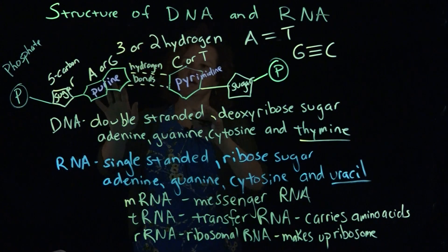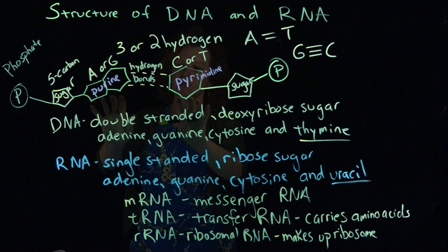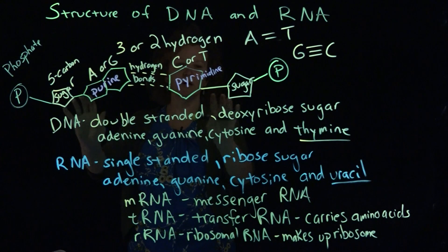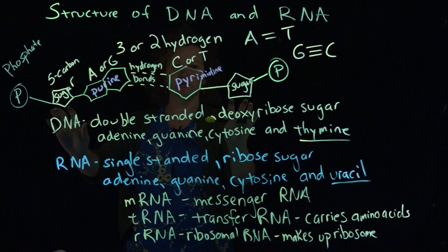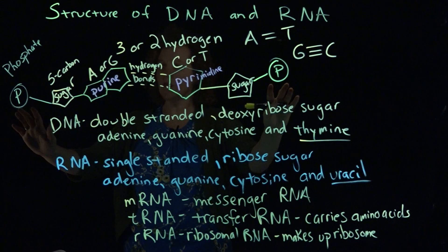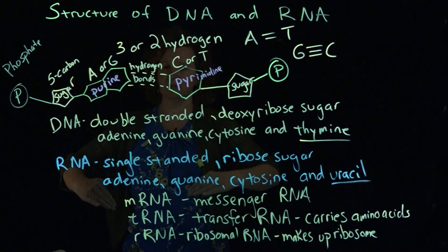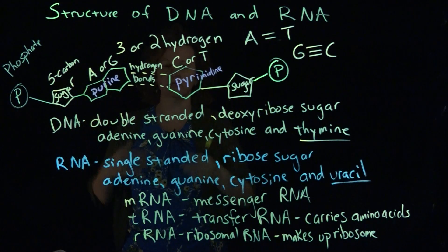The nitrogenous bases are held together in DNA by the hydrogen bonds, attached to that five-carbon sugar, which is deoxyribose in DNA, and then the phosphate. Keep in mind, these are all stacked on top of each other and then folded into the double helix.